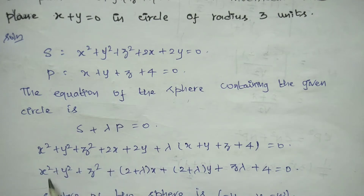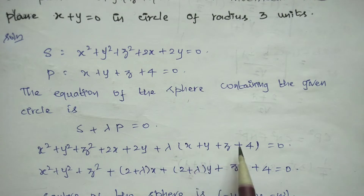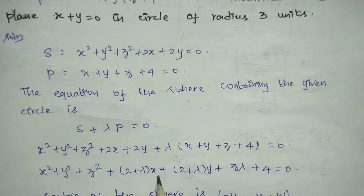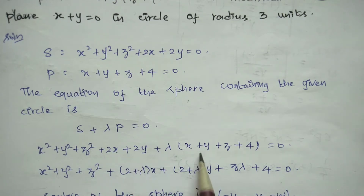From S + λP = 0, we expand and collect the xyz coefficients. The x coefficient gives us 2 + λ, and similarly for the y coefficient we get 2 + λ.